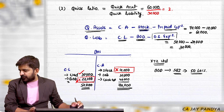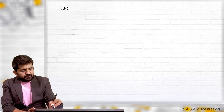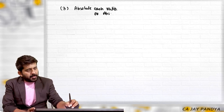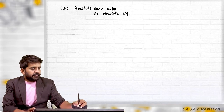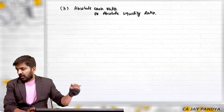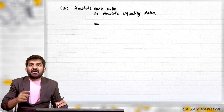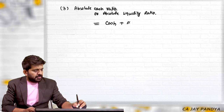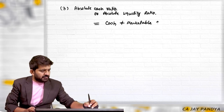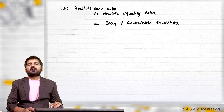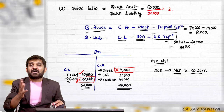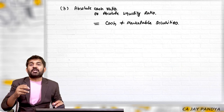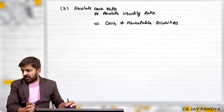The third ratio is the absolute cash ratio, also called the absolute liquidity ratio. In the numerator, we take only what is purely cash — cash plus marketable securities, where cash includes bank balance. So in current ratio we take all current assets; in quick ratio we take some current assets excluding stock and prepaid; and in absolute cash ratio we take only absolute cash assets — anything which is cash or very equivalent to cash — divided by current liabilities.